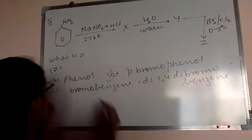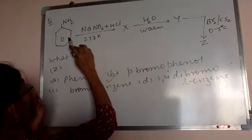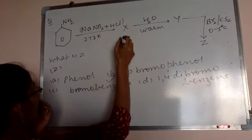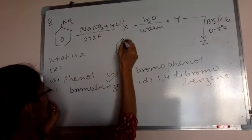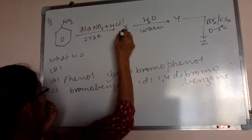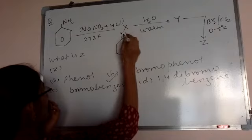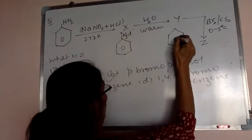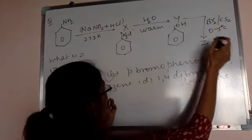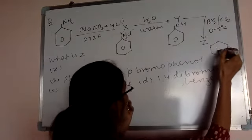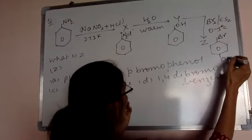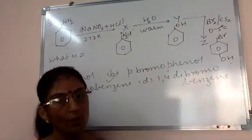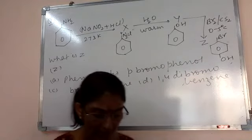Correct answer is parabromophenol. This is diazotization reaction: aniline with NaNO2 and HCl at low temperature gives benzene diazonium chloride. Warming with water gives phenol. Phenol with bromine in CS2 gives parabromophenol. So correct answer is parabromophenol.